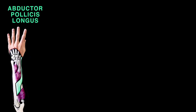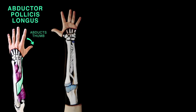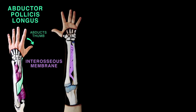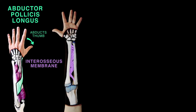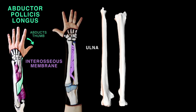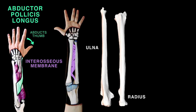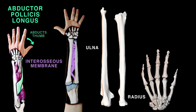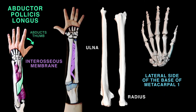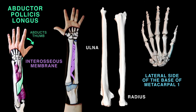The abductor pollicis longus originates from the interosseous membrane and the adjacent posterior surfaces of the ulna and the radius. It attaches to the lateral side of the base of metacarpal 1 and abducts the thumb.